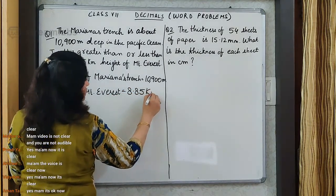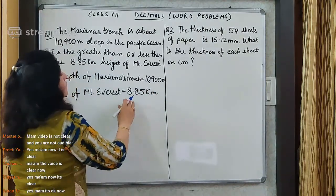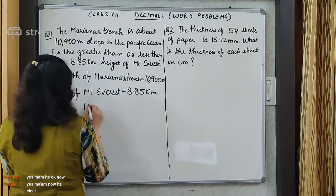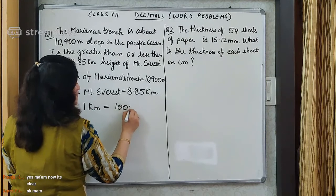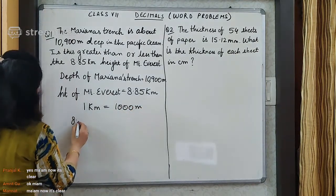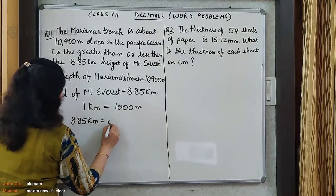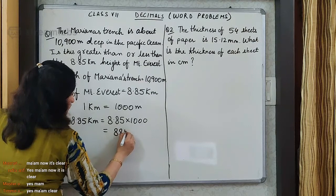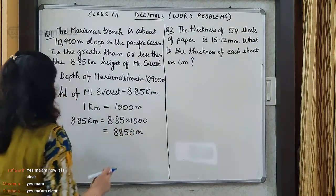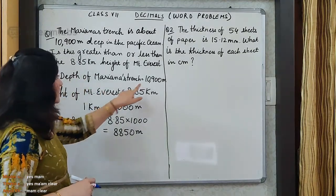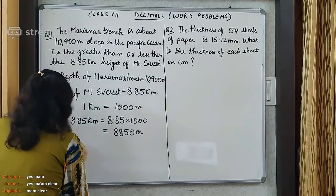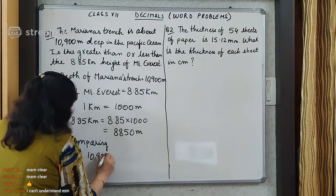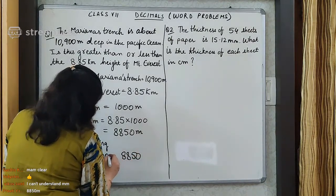The answer is equal to 8.85 kilometer. We will convert this kilometer into meter. 1 kilometer is equal to 1000 meter. Therefore, 8.85 kilometer will be equal to 8.85 into 1000, which gives me 8850 meter. So this becomes the height of Mount Everest, and here is the depth. Now we can compare the two. Comparing, we get 10900 and 8850.